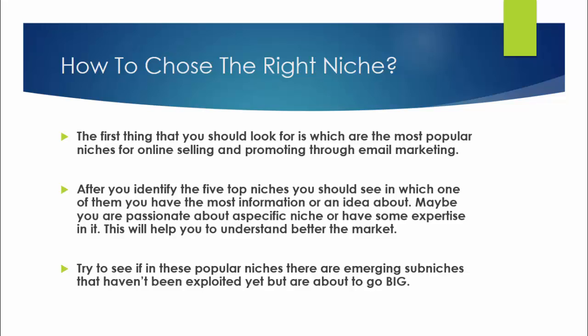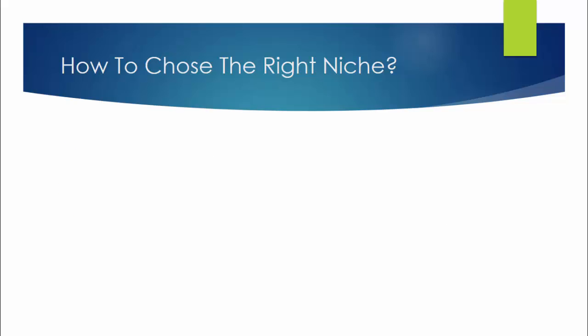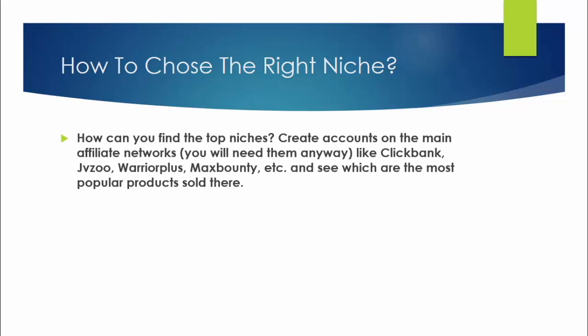I will tell you how you can see which are the best online selling niches and the ones that most people are promoting through email marketing. How can you find the top niches? Create accounts on the main affiliate networks — you will need them anyway — like Clickbank, JVZoo, Warrior Plus, Max Bounty, and others. See which are the most popular products sold there. That way you can find the perfect offers, and you will see that sometimes there are more offers in the same niche — those are the popular niches.